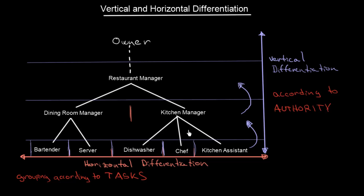And that is the whole idea. Horizontal differentiation is about grouping people and resources according to their tasks, and vertical differentiation is about grouping and differentiating according to authority.